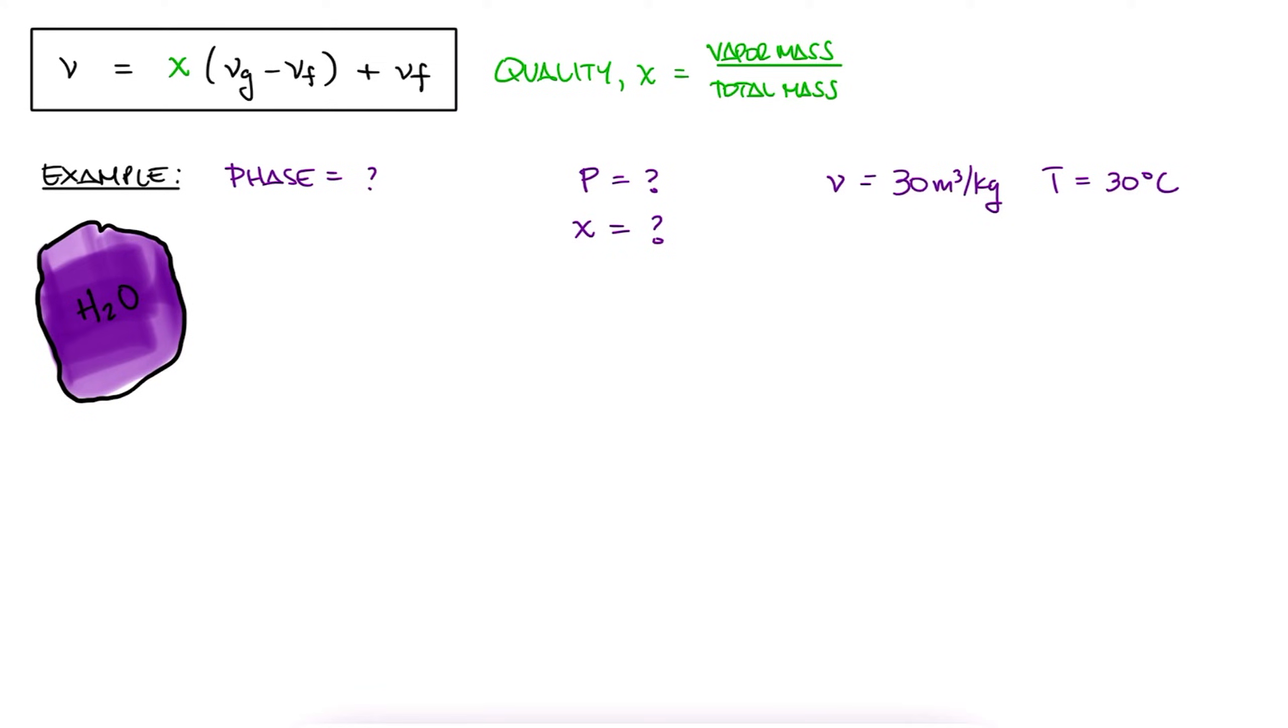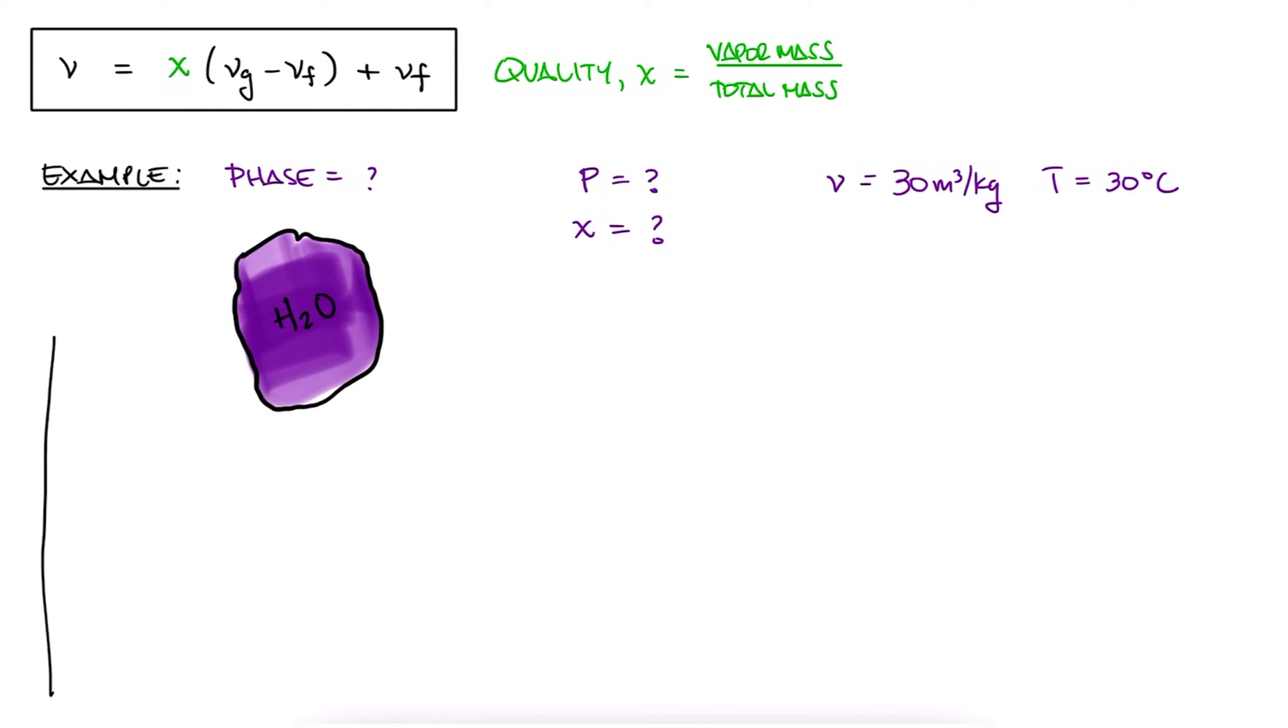Remember to pause here and try to solve this problem without watching the solution just yet. If we draw our TV diagram, we know we are located somewhere along the 30 degrees Celsius temperature. Since we first need to know if we have compressed, saturated, or superheated water, we can look up the Vf and Vg values for 30 degrees Celsius and compare our current specific volume to those.